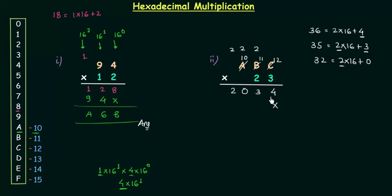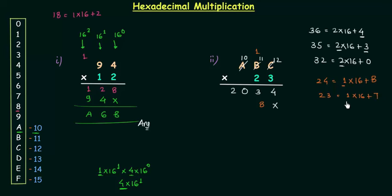Now I will put a cross mark here because we are multiplying A, B, C by 2, and the minimum weight we can have is 16 raised to power 1. 2 multiplied by 12 is 24 — not a hexadecimal number, so we break it: 1 multiplied by 16 plus 8. So 8 will come here and 1 will go as carry. 2 multiplied by 11 is 22 plus carry 1 is 23, which gives 16 plus 7 — carry 1 and 7 comes here. 2 multiplied by 10 is 20 plus carry 1 is 21; we break that as 16 plus 5. So 5 will come here, 1 goes as carry, and finally we have 1, 5, 7, 8 when we multiply A, B, C by 2.